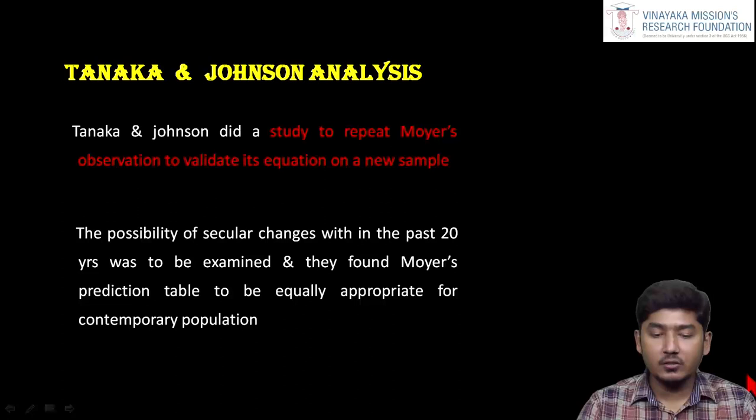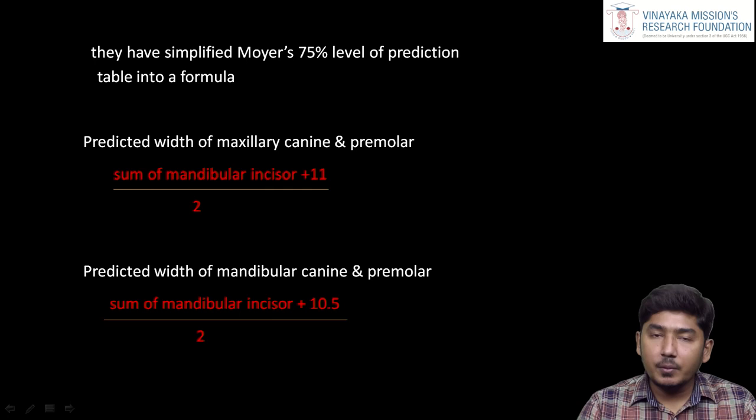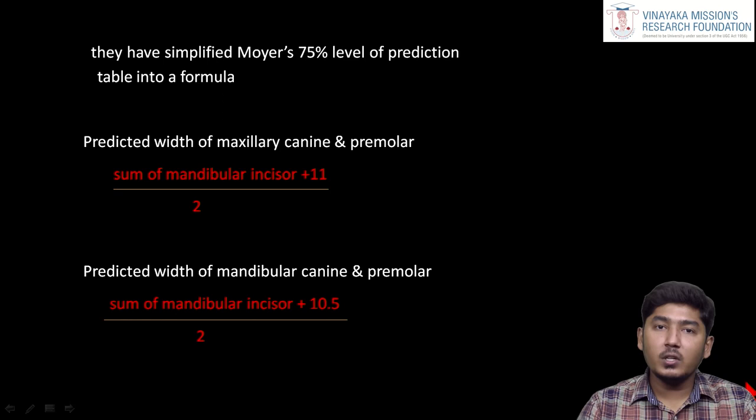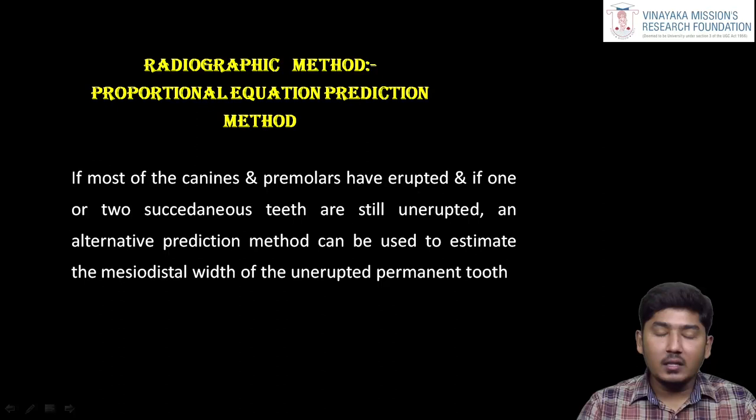Next is Tanaka-Johnson. Instead of using the Moyes chart, he came up with formulas. For the maxillary arch: (sum of mandibular incisors + 11) / 2 — this predicts the width of the succedaneous maxillary canines and premolars. For the mandibular arch: (sum of mandibular incisors + 10.5) / 2. Using this value as a constant, we can check the space for the succedaneous teeth and evaluate whether we need space or not.